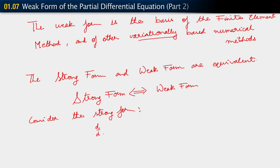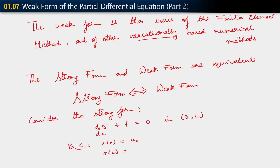That is: d/dx of sigma plus f equals 0, in the interval (0, L), with the boundary conditions. The boundary conditions we have are: u at 0 equals u-naught. Because we've written out the weak form for a single Dirichlet boundary condition only at x equals 0, the boundary condition at x equals L is sigma at L equals t. We also have the constitutive relation: sigma equals E times u comma x.